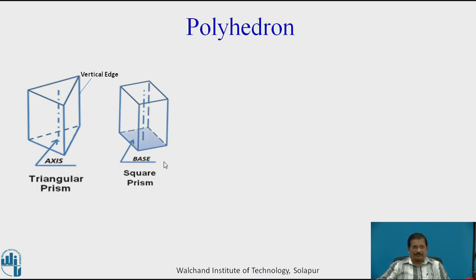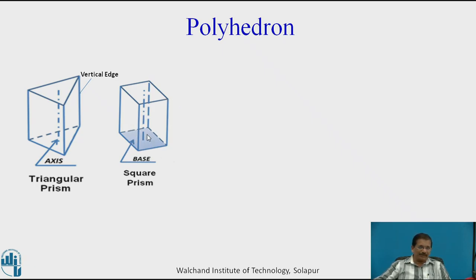This is a square prism. This is a base and this is a top base. This is an axis line, which you have to represent as shown. These are all rectangular faces which are longer or larger faces, and these are smaller faces or smaller edges. Its base will be a square and top base will also be a square, whereas faces will be rectangular. This is called a square prism.